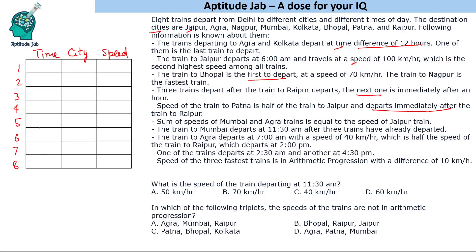We may not be sure of the exact time for a given train's position, but we can identify order. One of the trains is the last to depart — either Agra or Kolkata. The train to Bhopal is the first to depart with a speed of 70 kilometers per hour.